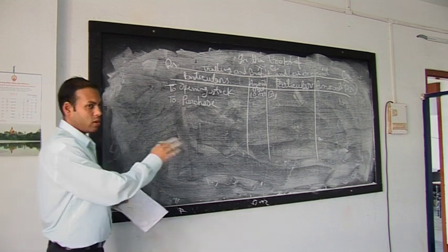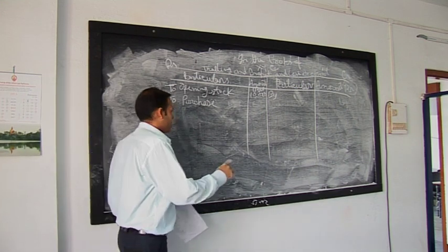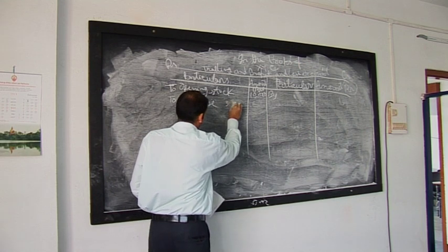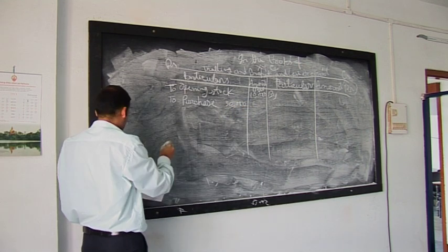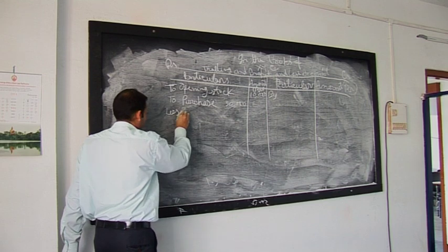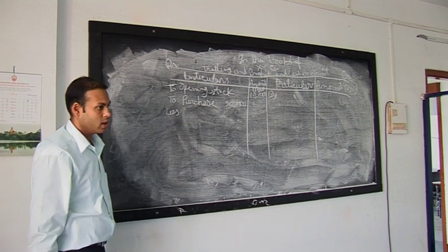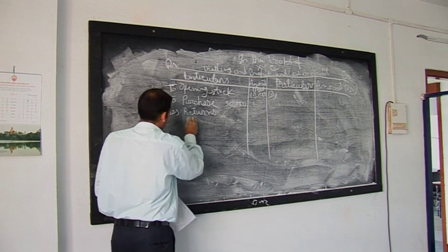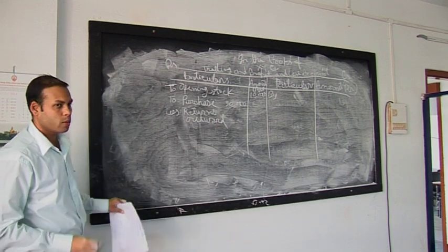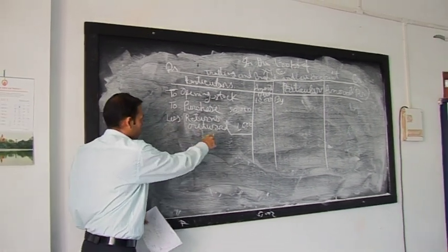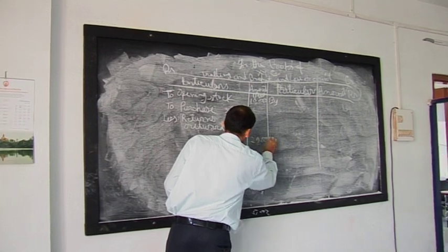Purchases need to be adjusted for returns outward. Returns outward — also called purchase returns — means goods we purchased but are returning due to defects. Returns outward is 1,000. So net purchases are 30,000 less 1,000 equals 29,000. This net purchase figure of 29,000 goes on the debit side of the trading account.